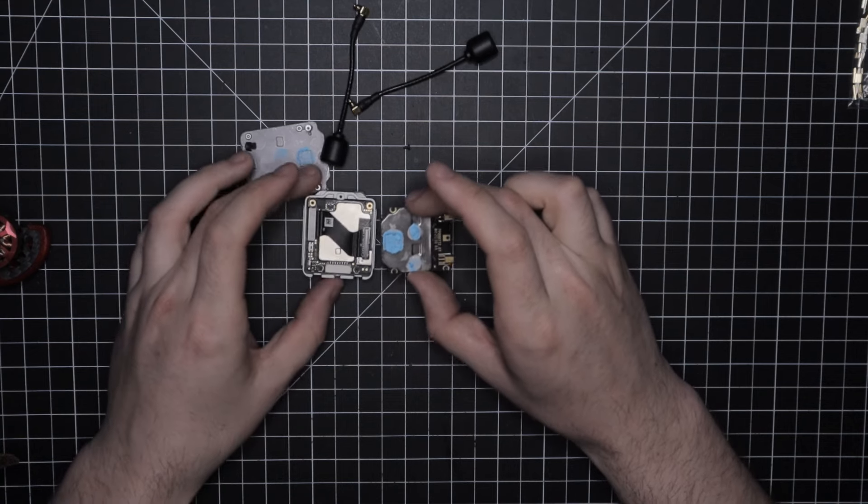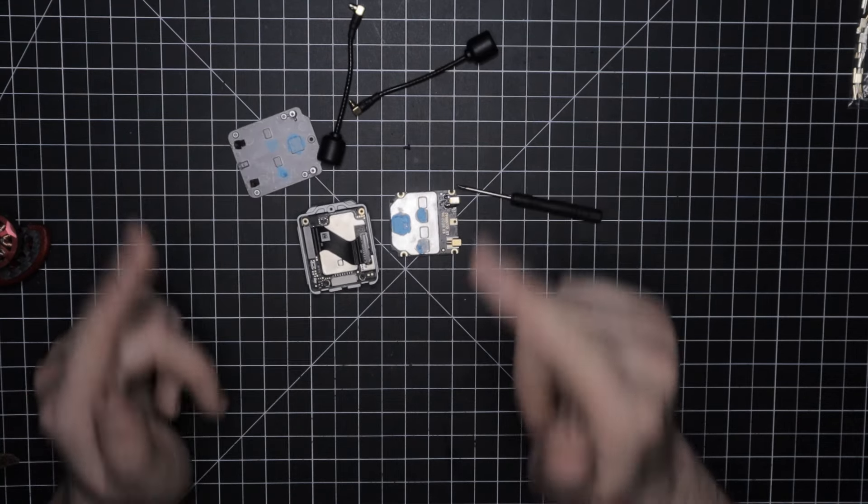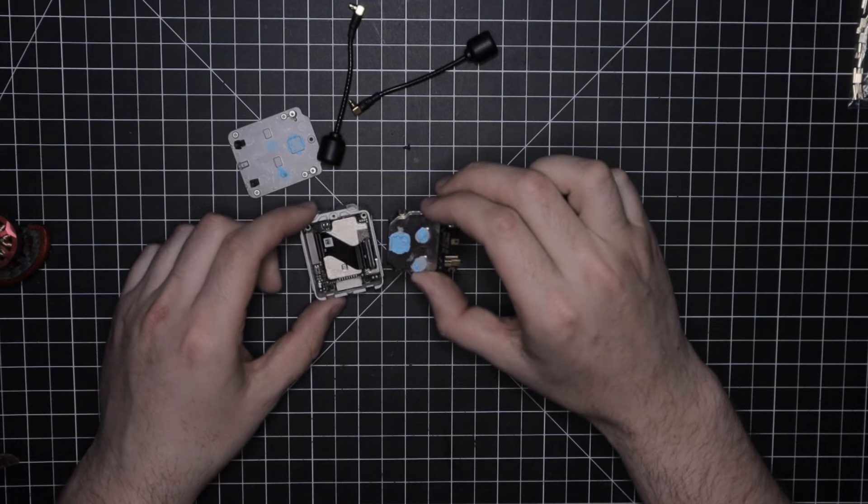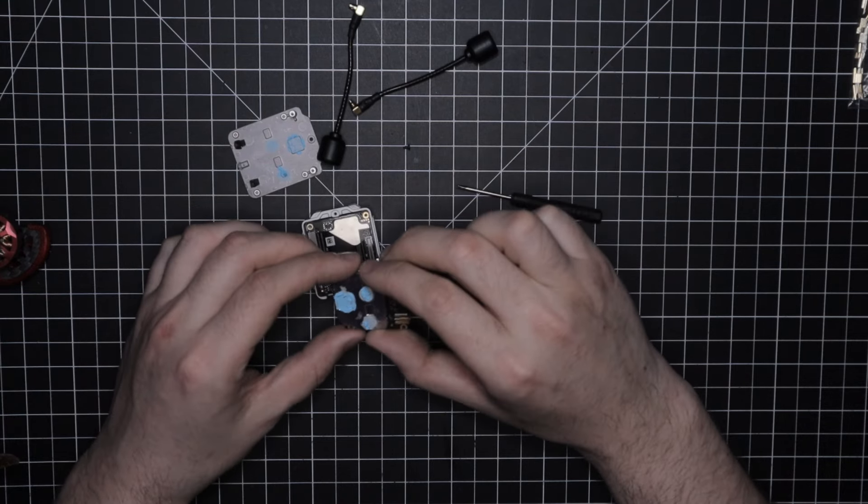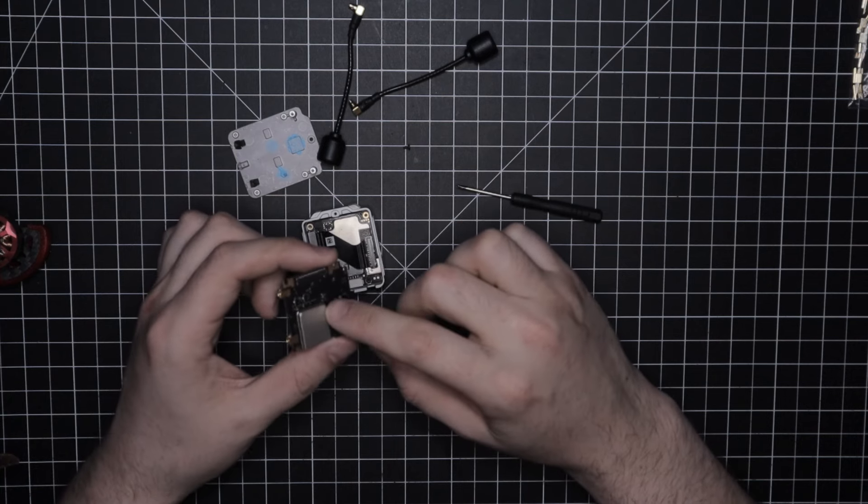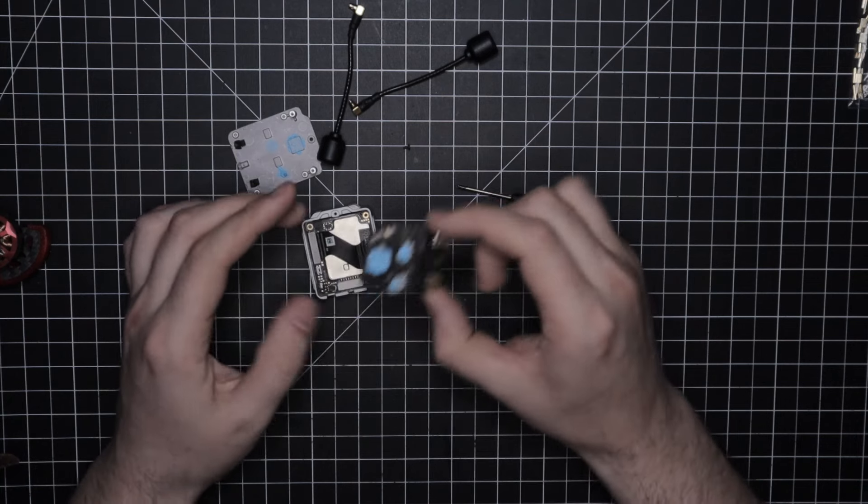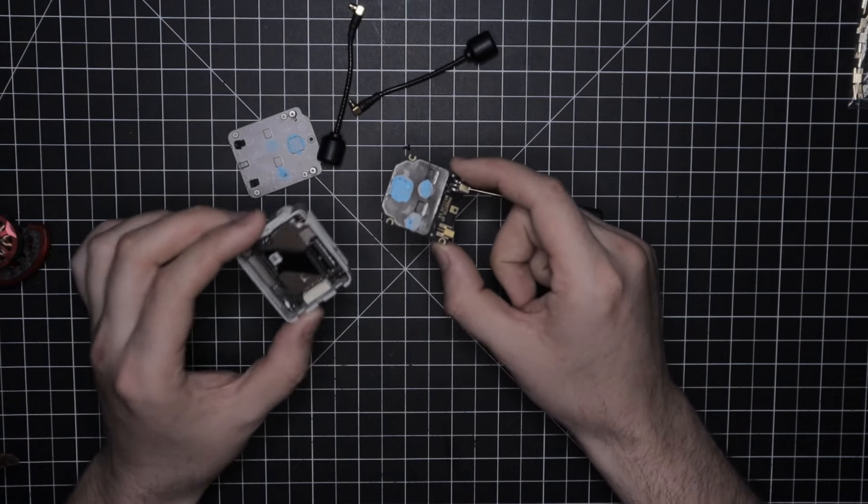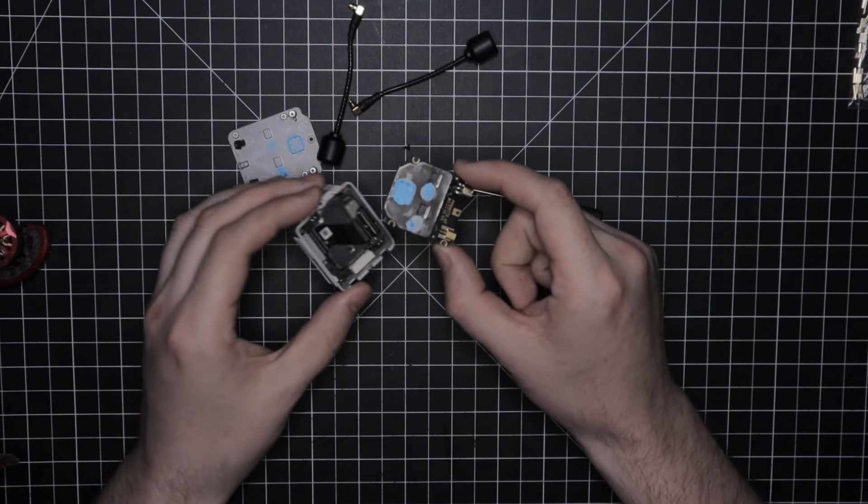So make sure you guys check out inside the actual VTX if you are having trouble binding. Hopefully this video helps you guys if you run into this issue. I bet you a lot of you guys did not know about this. I just stumbled upon it by trial and error and trying to figure out why I couldn't bind. But I hope this video helps you guys to troubleshoot your VTX. Again, this is the OG air unit.